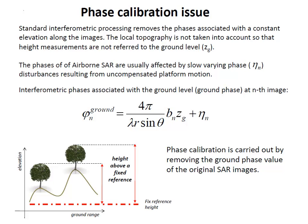Phase disturbances can result from uncompensated motion of the platform, leading to blurring phenomena. The blurring can be caused by baseline distribution, but linear interpolation can remove it. The effect can be written in the interferometric phase associated with the ground level — the ground phase — which accounts for the digital elevation model and phase from uncompensated platform motions. The phase calibration process estimates this ground phase and removes it from the original data.